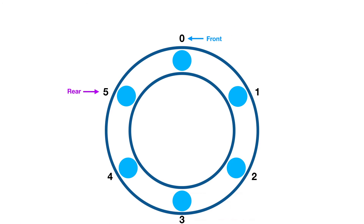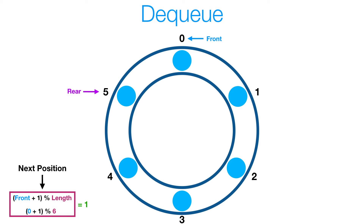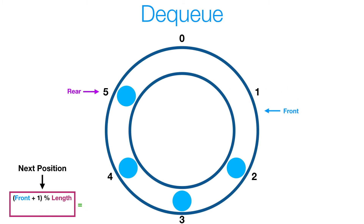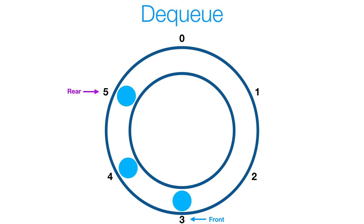Now let's look at the dequeue method. As we've seen with our enqueue method, to get the next index, all we do is take that current index, add 1, and then modulo the length of the array. That same calculation clearly applies to the front variable. So to set our front to the next index in the queue, all we do is take front plus 1 and then modulo length. So we'll get 1 % 6, which gives us index 1. And we do the same thing to get index 2, and the same thing to get index 3.